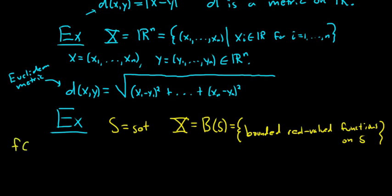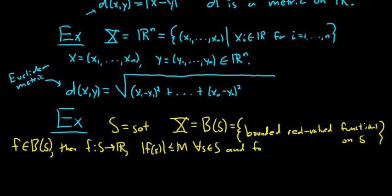For example, if f is in this set, then f maps S to ℝ, where S is the domain and ℝ is the codomain. f is bounded means |f(s)| ≤ M for all s in S and for some positive M. That's what it means for a function to be bounded. B(S) is the set of all bounded functions.